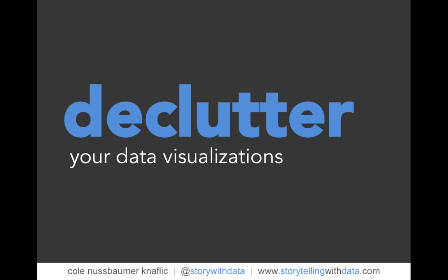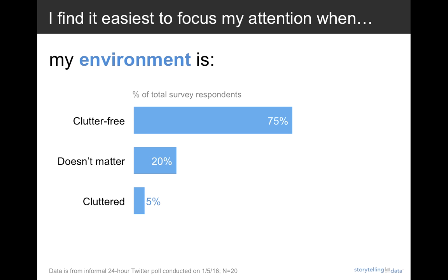So through a highly scientific study via a Twitter poll, I asked a couple of questions. First off, I find it easiest to focus my attention when my environment is either clutter-free, cluttered, or it doesn't matter. Now, one person pointed out — which is totally fair feedback — that the word clutter itself has negative connotation, and what different people will consider clutter will vary from person to person. But I think we can still make some broad points from this. First off, a decent portion — 20%, one in five — say clutter actually doesn't matter when it comes to their ability to focus their attention. Note, though, that the majority do say they prefer an environment that is clutter-free.